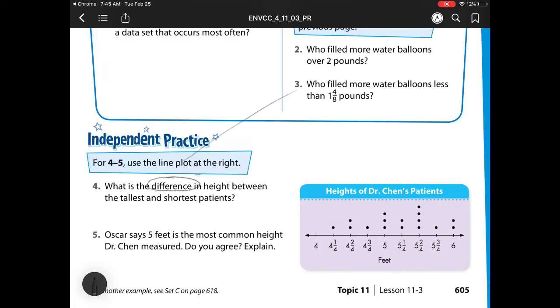Well, difference, that's subtraction. So we're looking for our tallest patient, which is 6 feet, and our shortest patient, which is 4 1/4. So we have 6 minus 4 1/4.